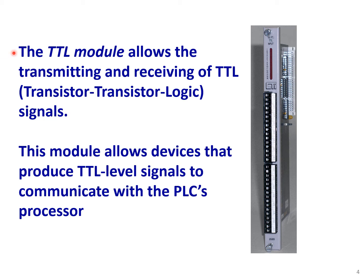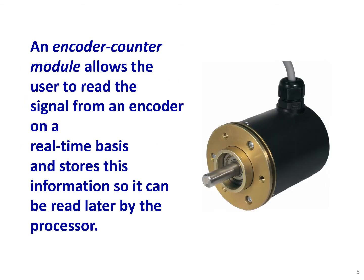Another special module is the TTL module, which allows the transmitting and receiving of TTL, or transistor-transistor logic, signals. This module allows devices that produce TTL signals to communicate with the PLC's processor. It's a common and useful type of special device for accepting TTL signals. An encoder counter module allows the user to track the signal from the encoder on a real-time basis and stores this information so it can be read later by the processor.